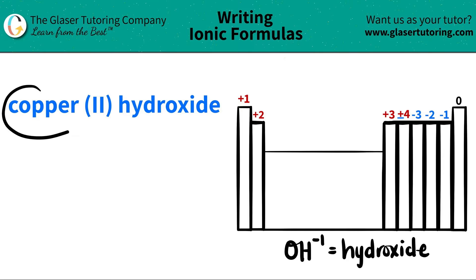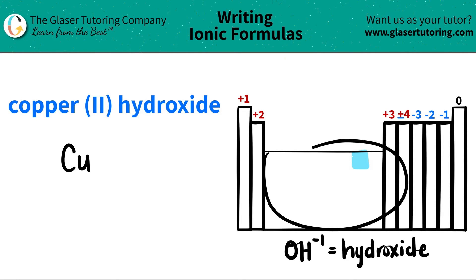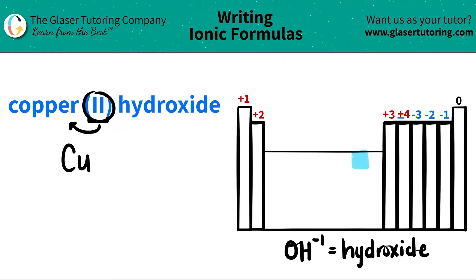Let's start from left to right. Copper is a metal, and copper on the periodic table is right here. If you look on your periodic table, it is Cu — that's the symbol for copper, and copper is always Cu. But since it's a transition metal, it has multiple charges. What charge is copper going to have? Well, that's the Roman numeral. The Roman numeral always tells you the charge of the metal. In this case it's a 2, so I know that this copper is going to be a plus 2.